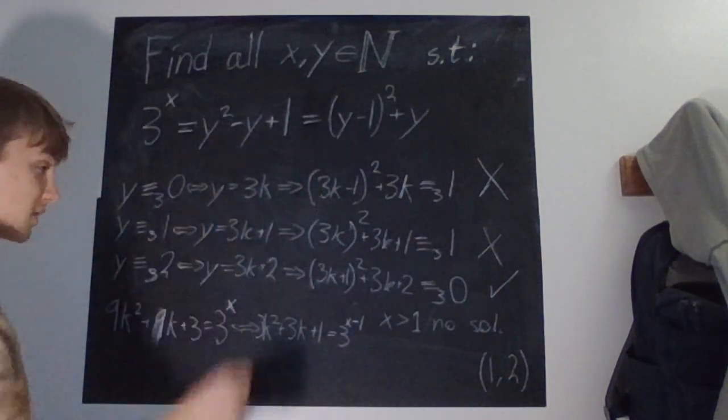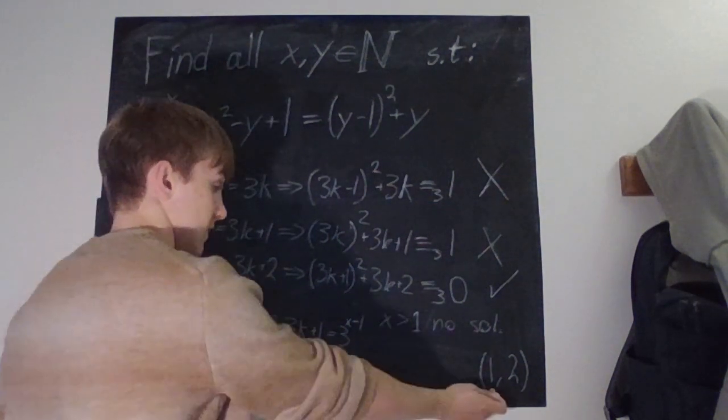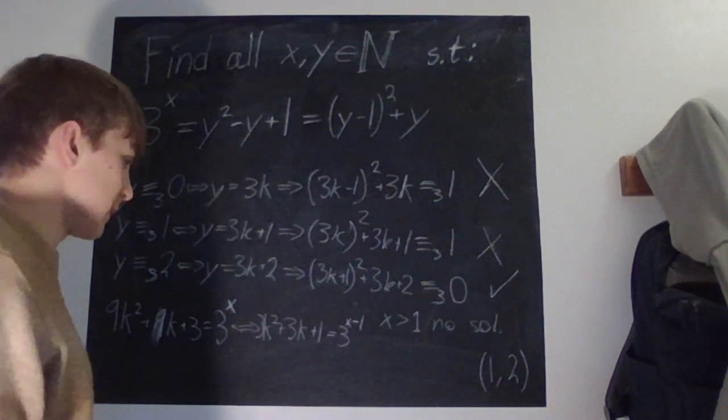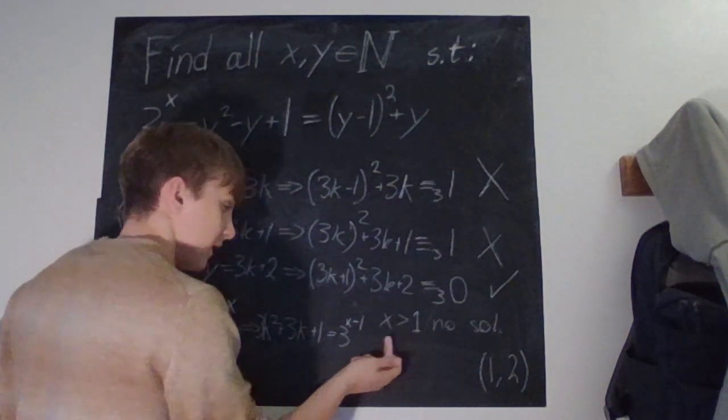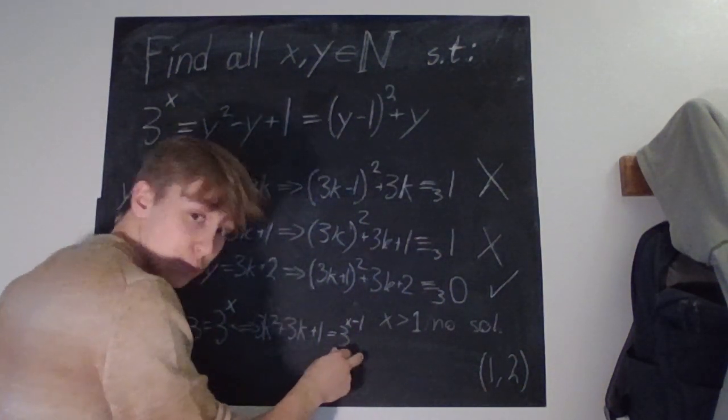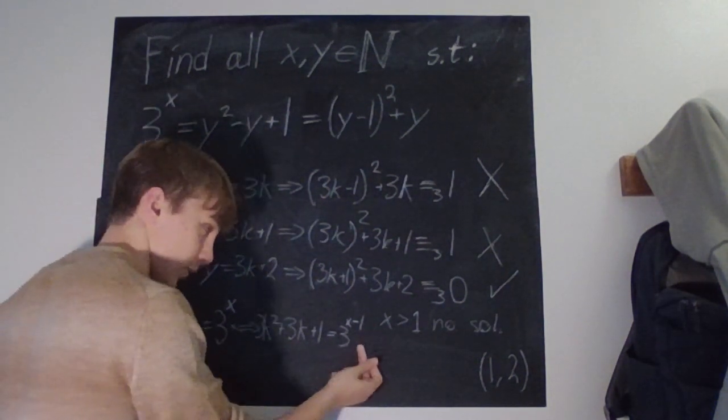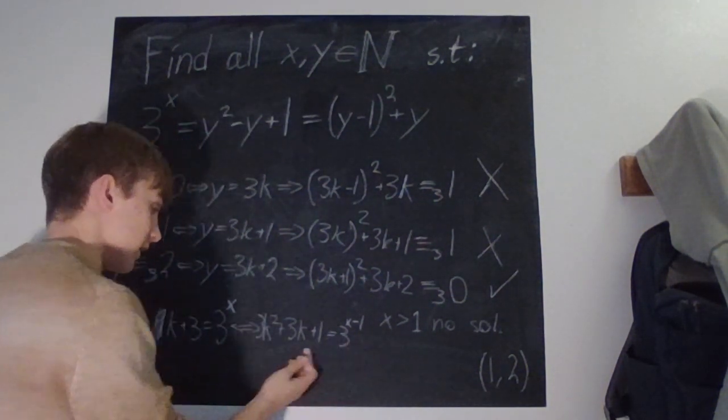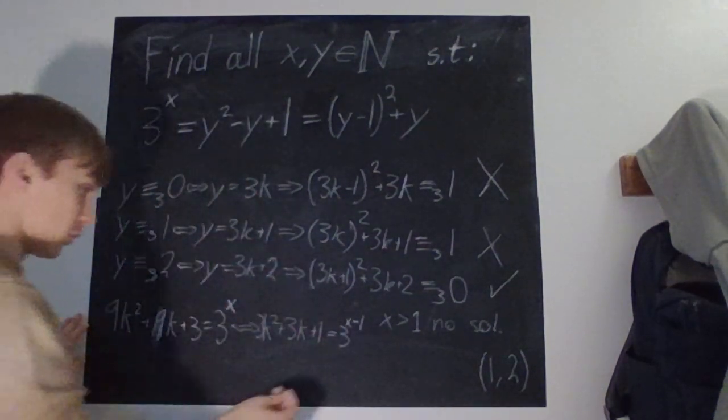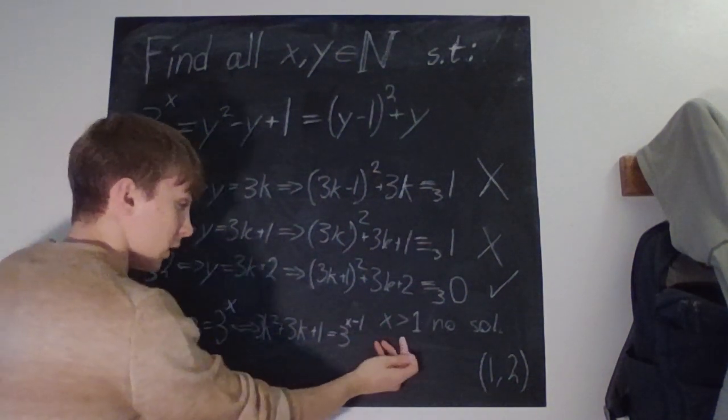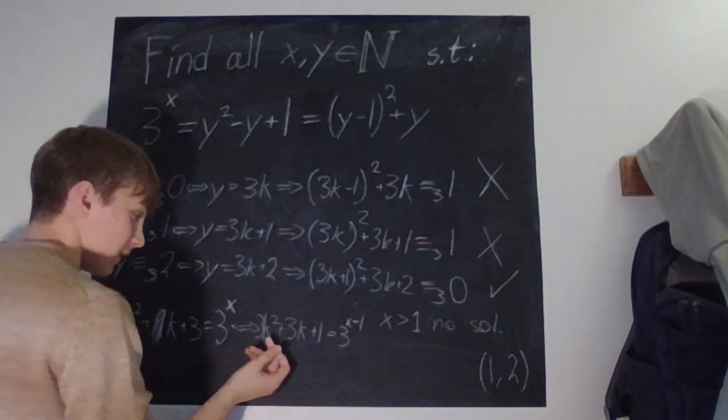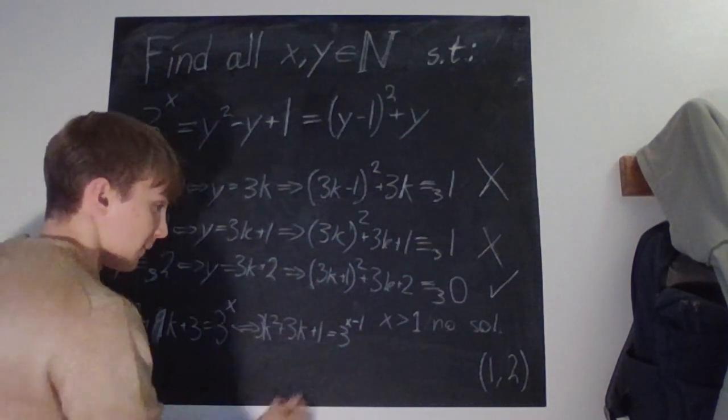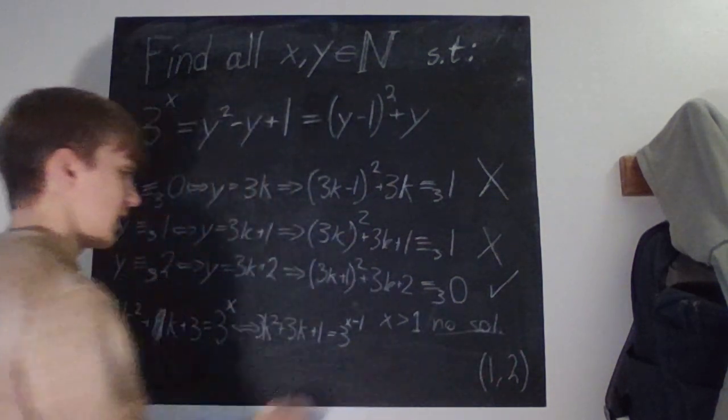And because x is a positive integer, the only solution is when x is 1, and that is the solution we found, it's 1, 2. Let me repeat this. Basically, if x is bigger than 1, then we have that this is 2 or bigger, so this is divisible by 3. Because if it is 1, then this is just 3 to the power of 0, which is 1, which is not divisible by 3. So if x is bigger than 1, that means that this is divisible by 3. And this left-hand side is always equal to 1 modulo 3. So this has no solution. It can never be the case.